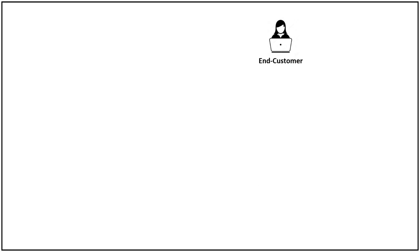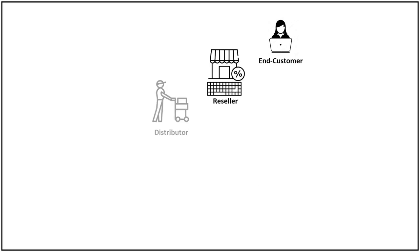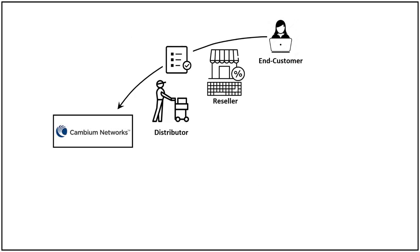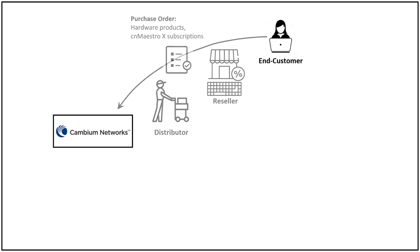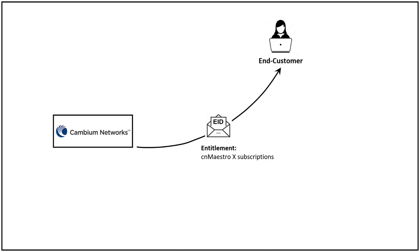Everything starts when you place an order with an authorized Cambium reseller or distributor. You'll receive the hardware portion of your order in the usual way. The subscription portion of your order is packaged as an entitlement and sent to you via email. The email has an entitlement ID or eID and the subscription details. You'll use this eID to activate your subscription and create slots in your CN Maestro X account.